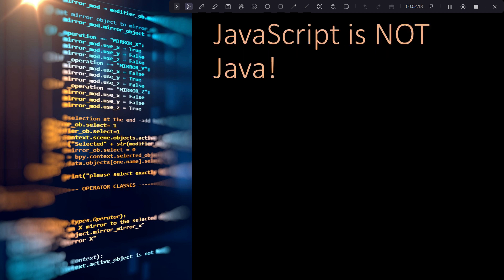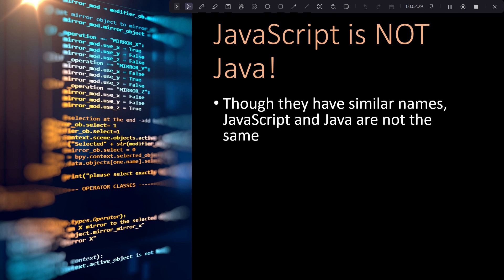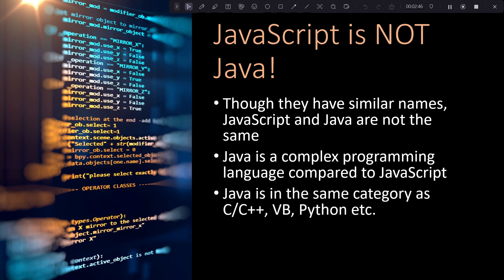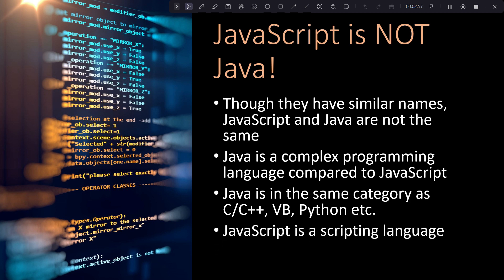JavaScript is not Java — that's very key. These are totally two different languages and they are not the same in any way. Java is a more complex programming language; with Java you can create desktop applications, mobile applications, and so on. Java is basically in the same category as C++, Python, or Visual Basic, whereas JavaScript is essentially just a scripting language.